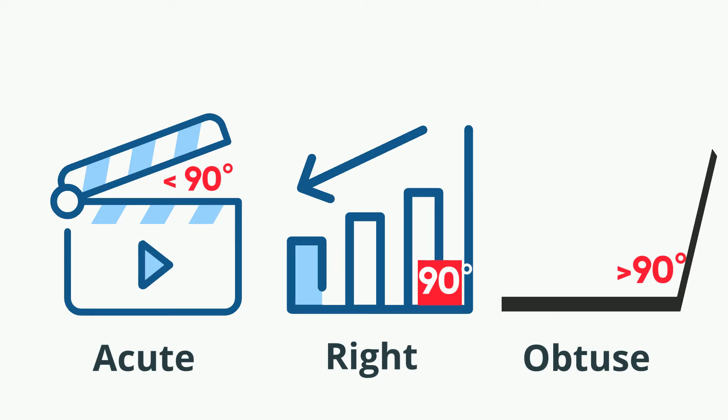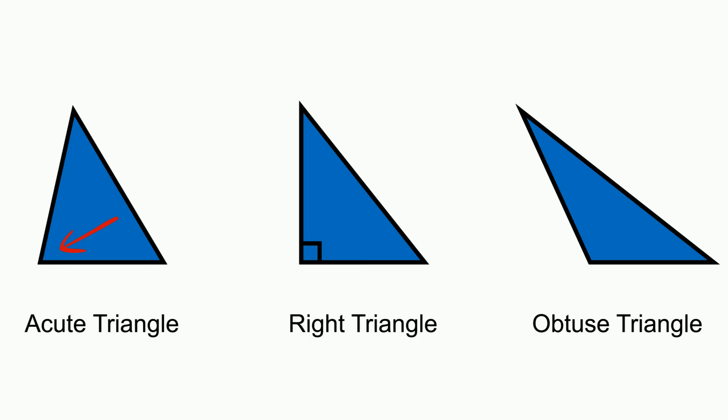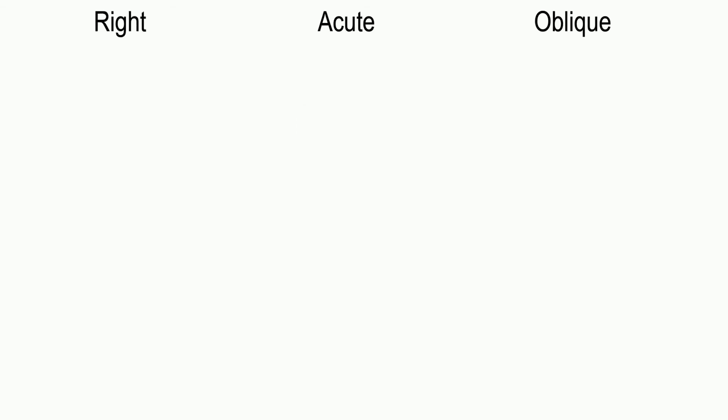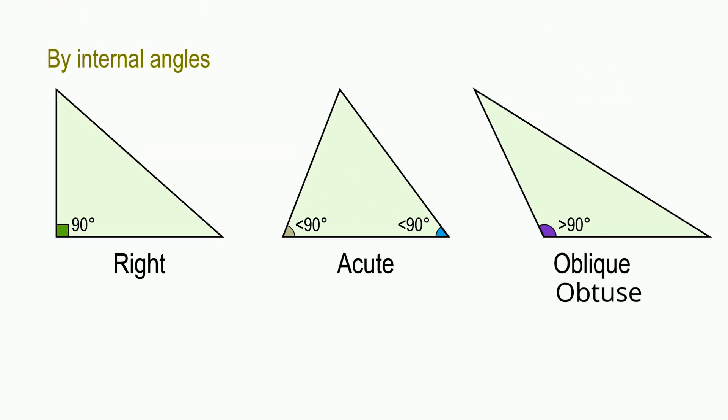All triangles have two acute angles and it is the third angle that determines the type of triangle you have. Let's look at the classification of triangles according to angles. An acute triangle is a triangle with three angles that measure less than 90 degrees.